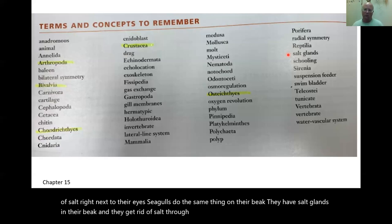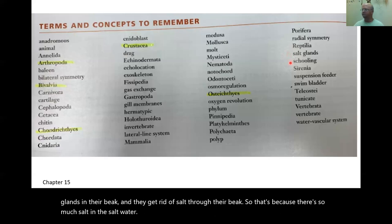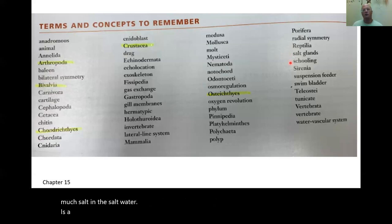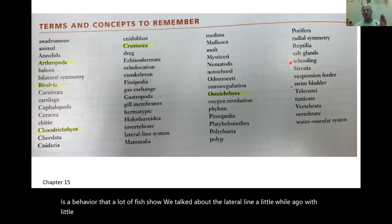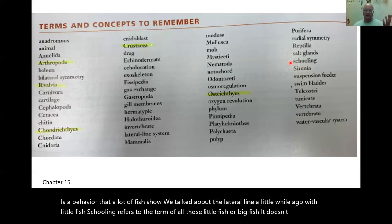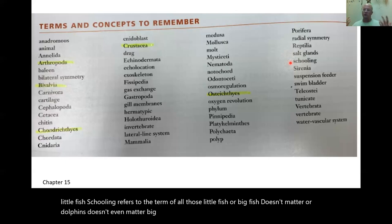Schooling is a behavior that many fish show — we talked about the lateral line system. Schooling refers to big groups of fish, or even dolphins, staying together. They form a school, a group.